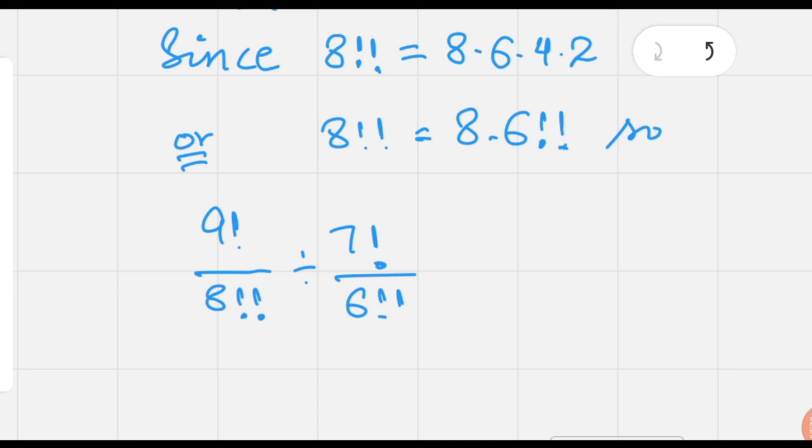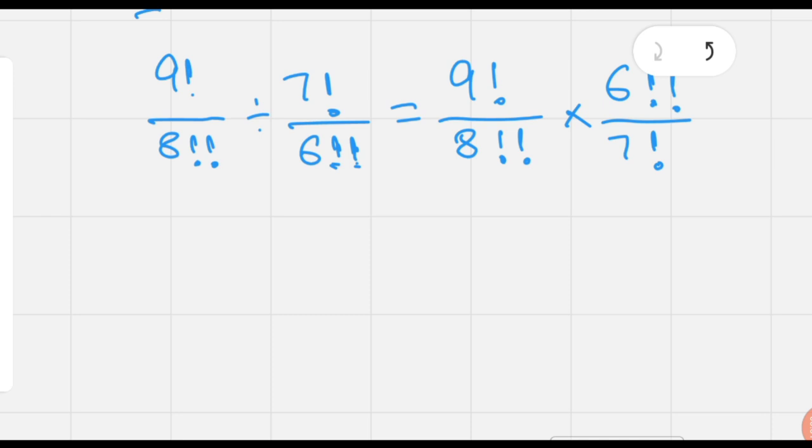Now since this is division of fractions, we know that in division of fractions we convert division into multiplication and reciprocate the second fraction, that is 7 factorial over 6 double factorial. So that 6 double factorial will be shifted in numerator and 7 factorial will be shifted in the denominator.